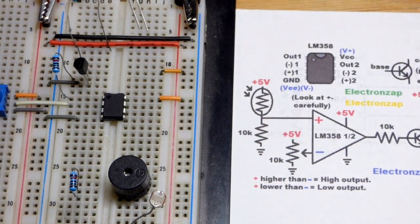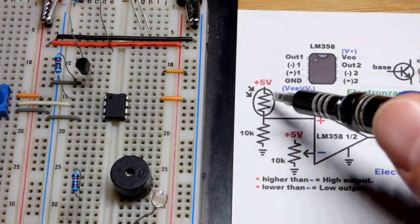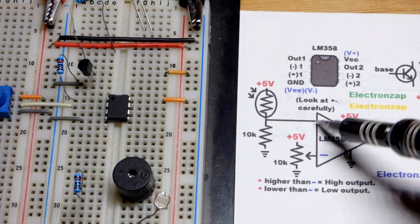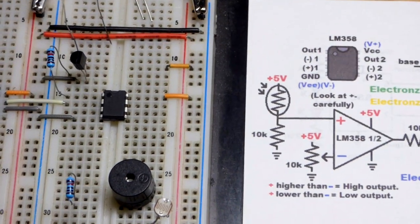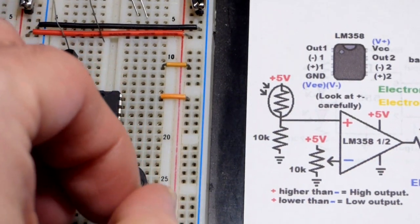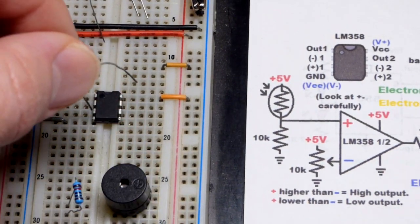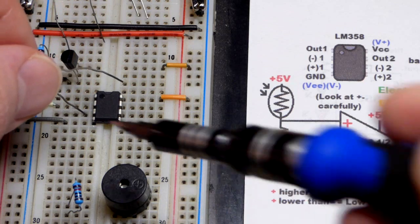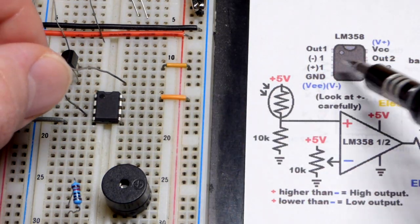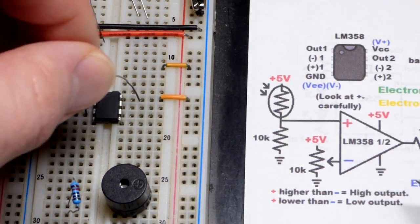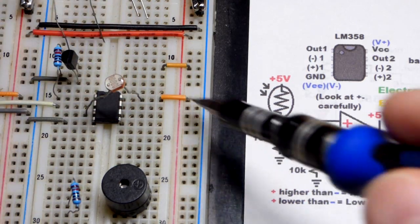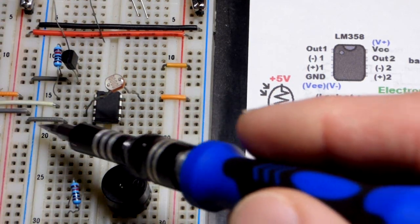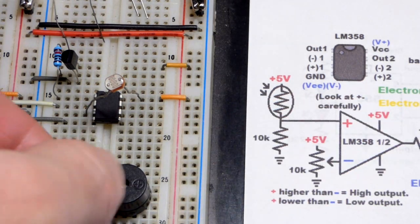Now we're going to look at our light dependent resistor. It goes to the non-inverting input. We can zoom in a little bit more. We're going to put it to the positive supply. I did turn the power supply off. There is the non-inverting input, the plus. I'm just going to jump over the op amp right there.